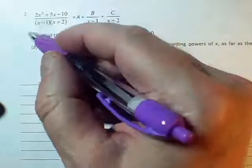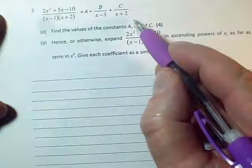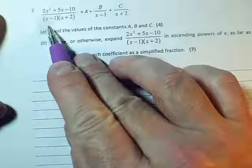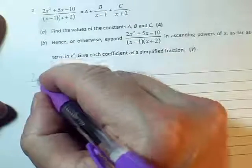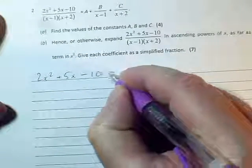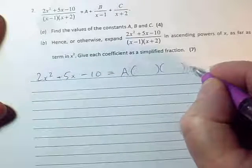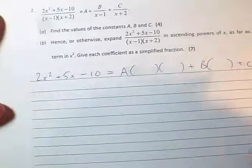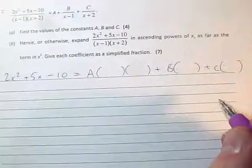But you'll probably find it more convenient just to go straight away with what they give you here and multiply up by both of these brackets x minus 1 and x plus 2 to get 2x squared plus 5x minus 10 equals a and that's going to be times two brackets plus b times a bracket plus c times a bracket and then put in